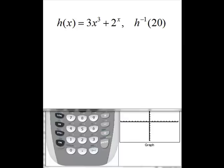So the first problem gives us h of x equals 3x cubed plus 2 to the x, and asks us to find h inverse of 20. We're not going to be able to algebraically find an inverse function for this, but it didn't ask us to. It actually only asked us to find h inverse of 20.